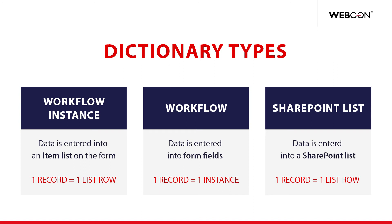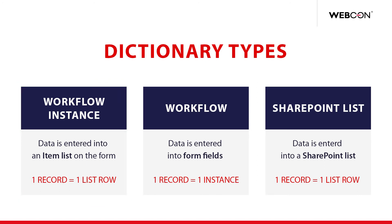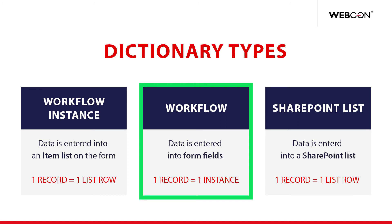The first type is the workflow instance — the idea is that we have a very simple, rudimentary workflow, and inside it we have one single workflow instance. That workflow instance has an item list, and this item list has columns that store data, where one row on this item list is one record of the dictionary. The other type is the workflow, where we have a slightly more fleshed-out workflow that serves as the dictionary, and each individual instance inside this workflow is one record, with data stored in standard form fields.